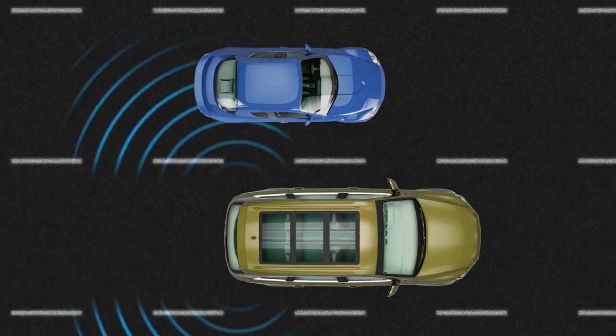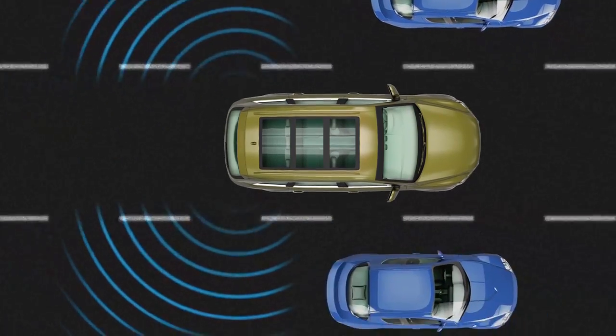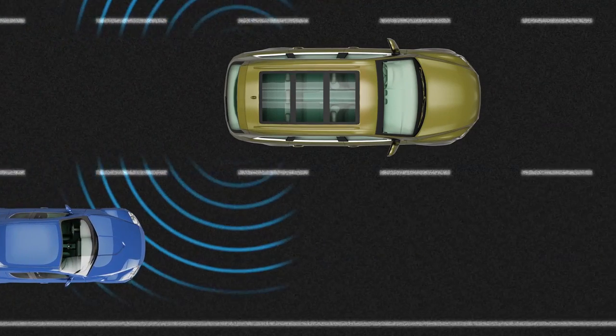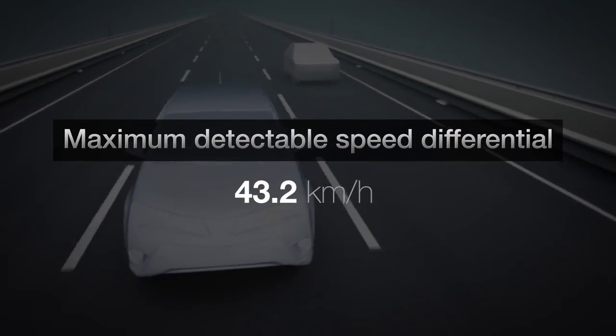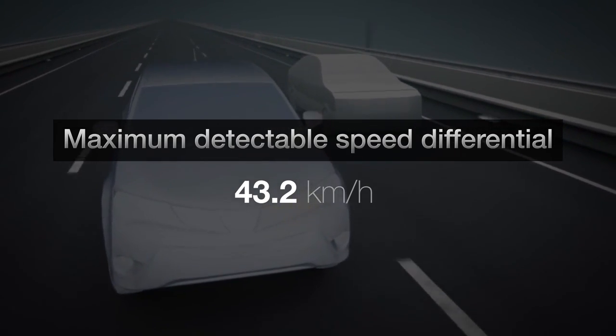The system is designed to detect vehicles larger than a 125cc motorbike moving at a speed greater than 16 km per hour. The maximum detectable speed differential between the two vehicles is 43.2 km per hour.